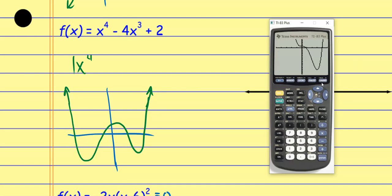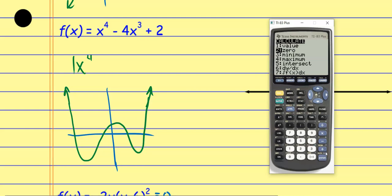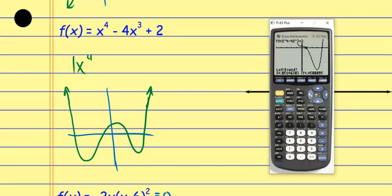From here I want to find all these values, starting with the x-intercepts. For x-intercepts, I hit Second, Calculate, and go down to number 2, Zeros — zeros, roots, x-intercepts, and solutions all mean the same thing. It gives me that familiar left bound question mark. I scroll over to approximately where the x-intercept is, go left of it, hit Enter, then go to the right making sure the y value is now negative, hit Enter, then take a guess. It tells me this x-intercept is about (0.86, 0).